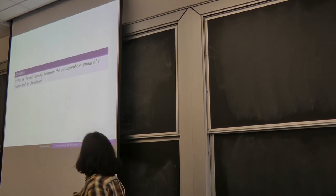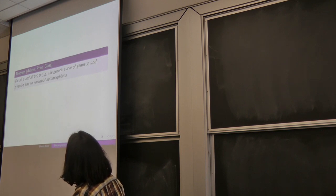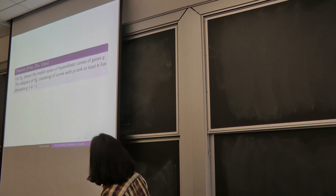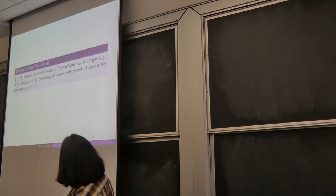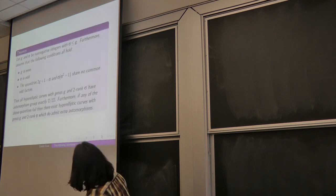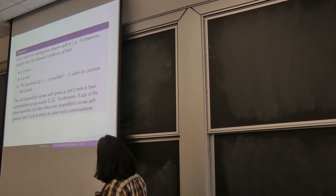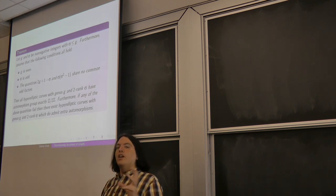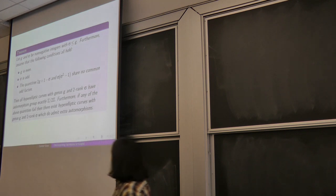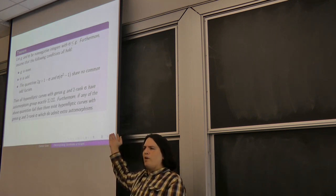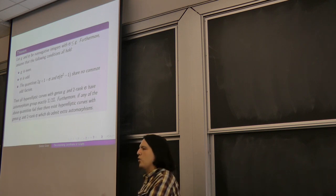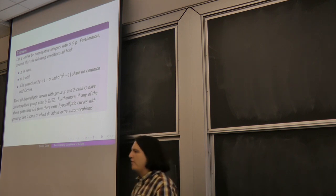Those of you who have seen me give talks might have seen a theorem that says generic curves of any p-rank have no non-trivial automorphism, or various results about subspaces of curves with p-ranks, or a theorem describing restrictions about the relationship between the automorphism group of a curve and its p-rank. I've also looked at results about a-numbers and Ekedahl-Oort strata.